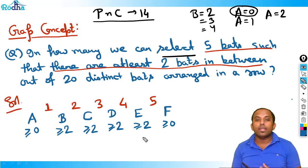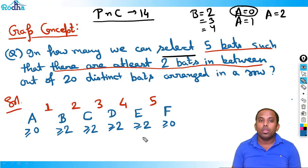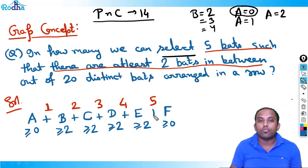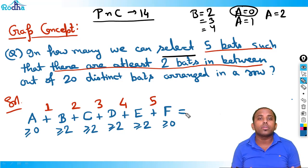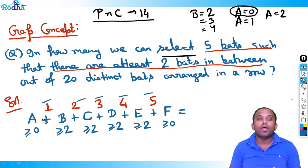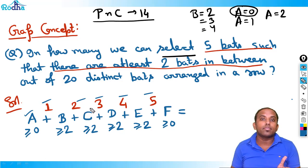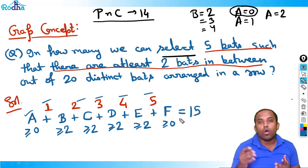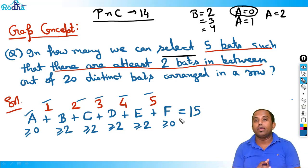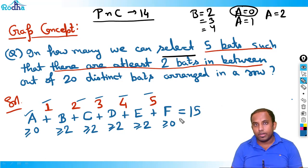So A can take 0, F can take 0, and B, C, D, E can all take at least 2. Now if I add all these values: A + B + C + D + E + F, it should equal 15, because out of 20 bats I have already picked five, so the remaining bats distributed across the six gaps must sum to 15.